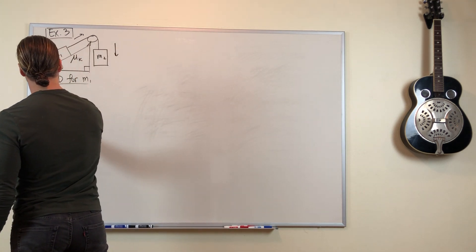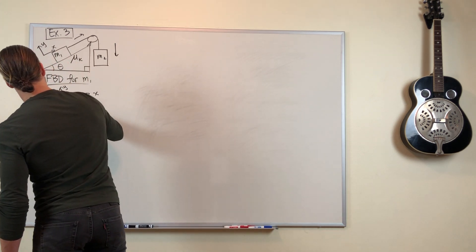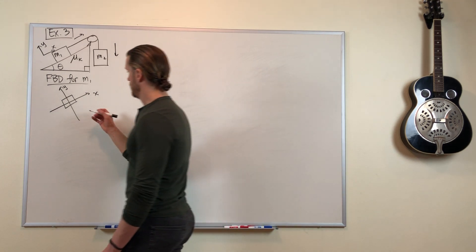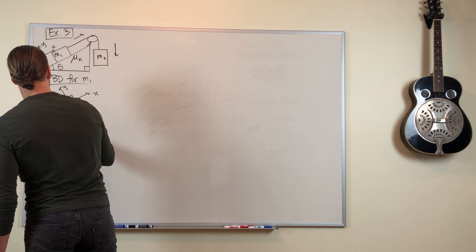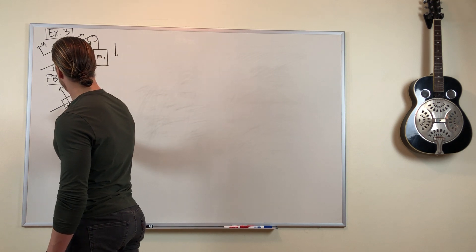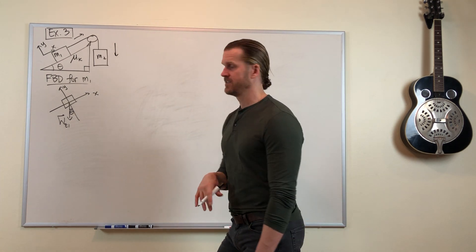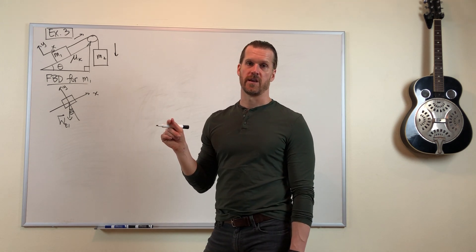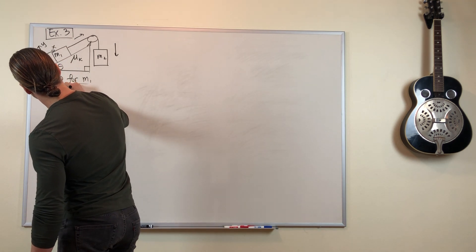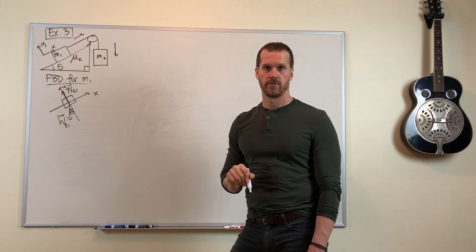Here's the free body diagram with our funny coordinate system. There's mass 1 experiencing a bunch of forces. It's got gravity pulling straight down, and that angle theta is right here between the gravity force vector and the negative y-direction. If that's confusing, go check out one of my earlier lectures about tilted coordinate systems. There is normal force of the ground on mass 1 that points perpendicular to the surface, perpendicular to the slope.